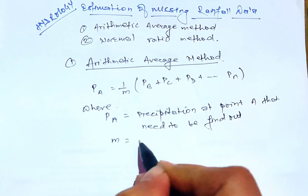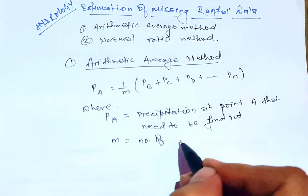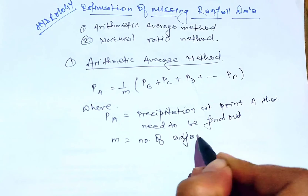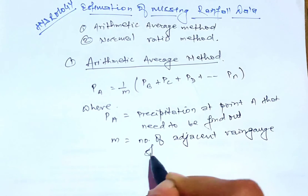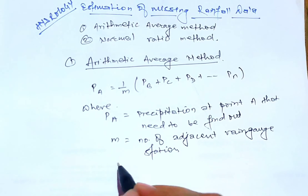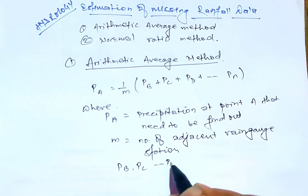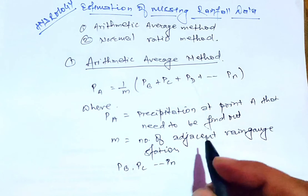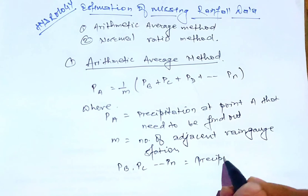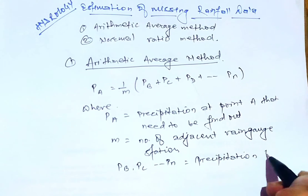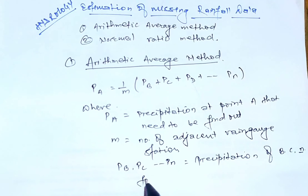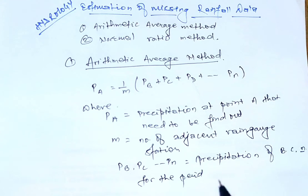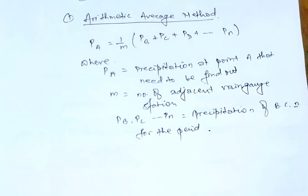M equals the number of adjacent rain gauge stations, and P_B, P_C, up to P_N are the precipitation values at stations B, C, and so on for the period during which the data are missing. Let's clarify this with an example.